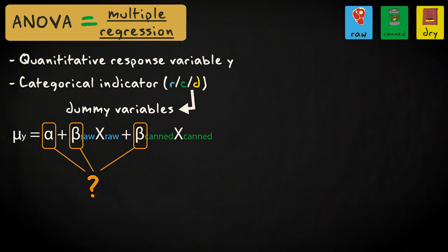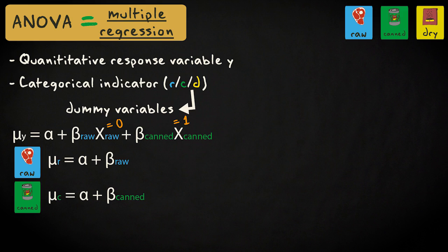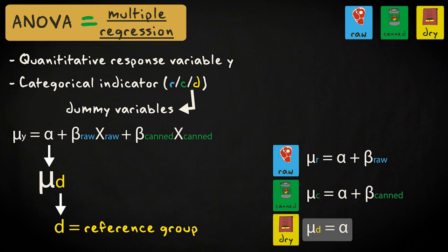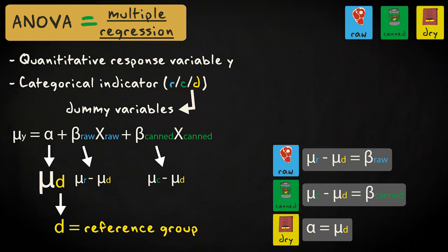How do we interpret the intercept and the regression coefficients? We'll consider the regression model for each diet group. For cats fed on raw meat, the population mean equals alpha plus beta sub raw. For cats fed on canned food, the population mean equals alpha plus beta sub canned. For cats fed on dry food, the population mean equals alpha. So the intercept represents the population mean of the last group — fed on dry food in this case — called the reference group. Beta sub raw represents the difference in the population mean of the raw group minus the population mean of the dry food group. Beta sub canned represents the difference in the population mean of the canned food group minus the population mean of the dry food group.